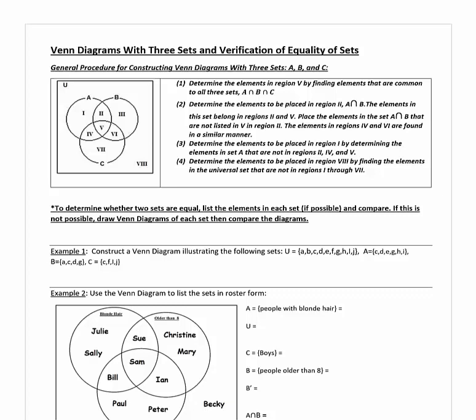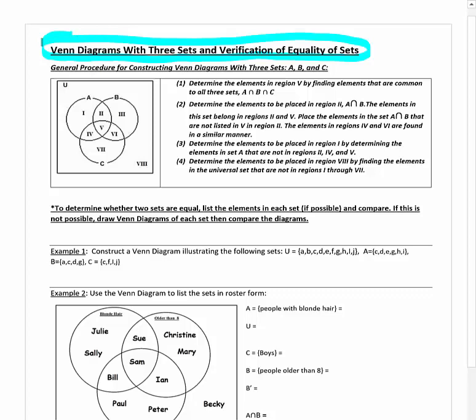Hello, everyone. In the last section, we talked about an intro to Venn diagrams, and for the most part we talked about Venn diagrams with two sets. But this time, we're going to introduce three sets. I think we talked a little bit about three sets in one example in the last section — I just wanted to throw it in there so it's not super surprising. We'll talk about Venn diagrams with three sets; it makes things a lot more complicated.